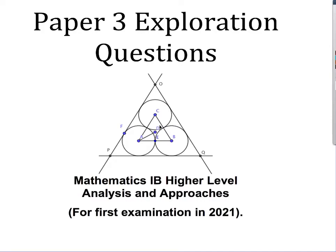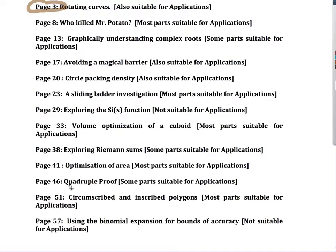I'm going to do another video on an example Paper 3 question. This is for the IB Higher Level Analysis and Approaches, first examination 2021. For Paper 3, the questions are going to be investigative, where you're using and applying the mathematics you already know. I've put together a list of 13 examples of questions that I think could come up, showing the sorts of maths you'll need. You can download these by following the link underneath.